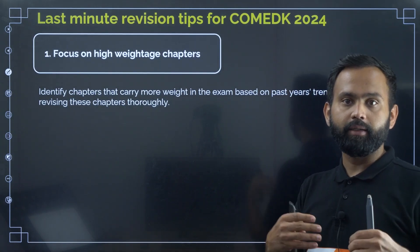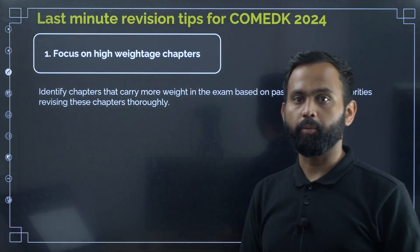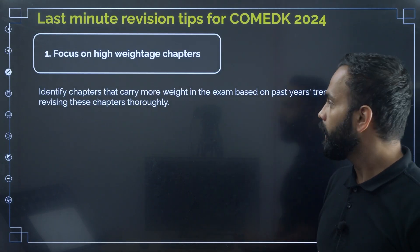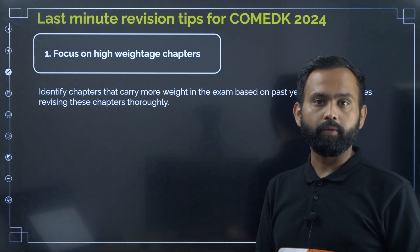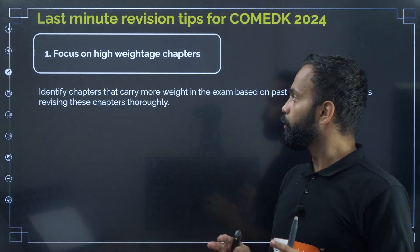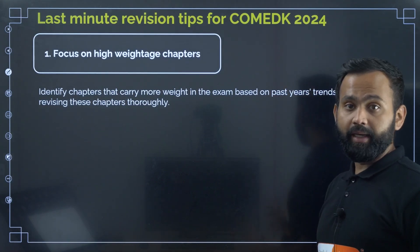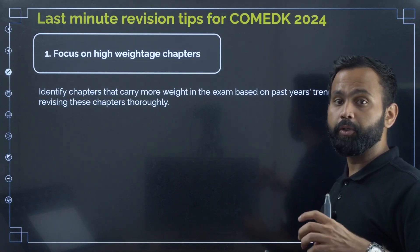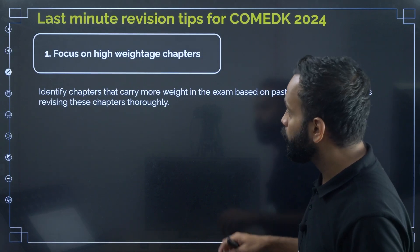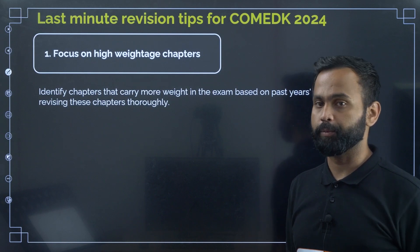I have identified the high-weightage chapters. So you should have made short notes — revise the formulas of all those chapters and revise the concepts as well. If you can, solve some numerical problems. Mainly focus on second PU chapters because second PU is high-weightage; they will ask more questions from second PU compared to first PU. So revise second PU first and then go to first PU.